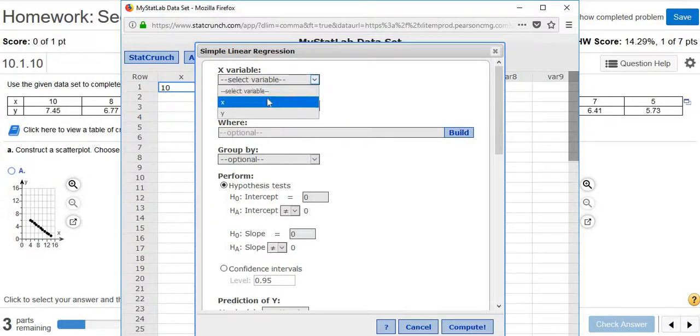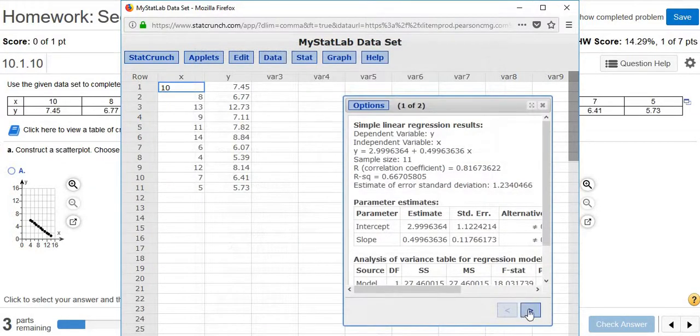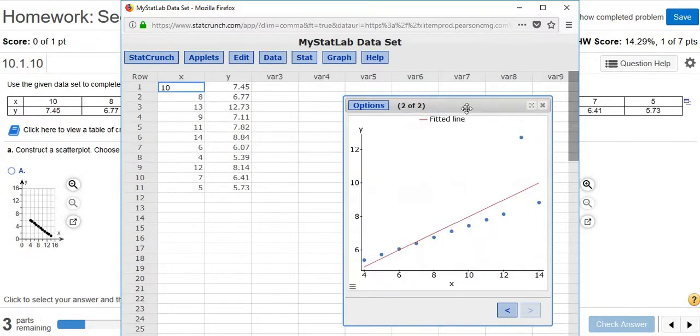Just pick the first thing, pick the second thing, click Compute. Then this little arrow here, just click that, and there's your scatter plot.